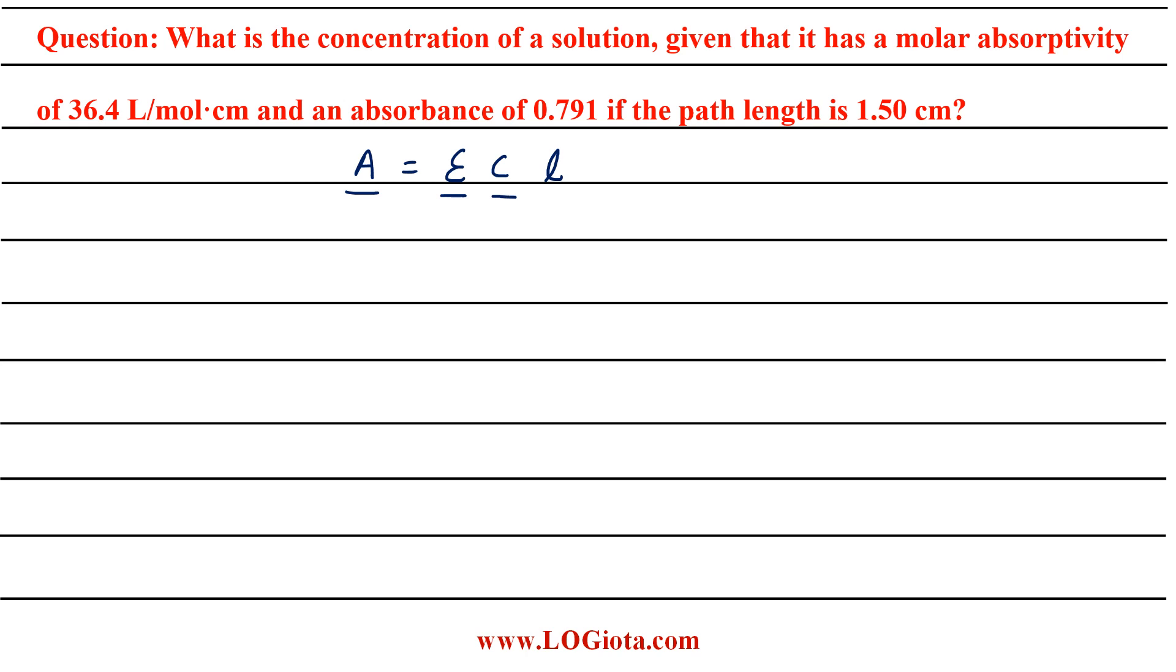C is the concentration and L is the path length. So A given value is 0.791, epsilon given is 36.4 liter per mole centimeter, C we need to find and L is 1.50 centimeter.